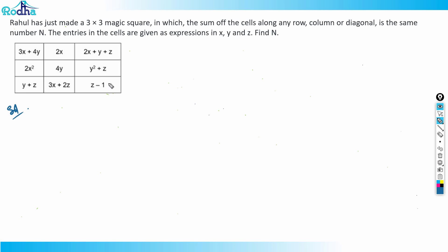We'll try to find the sum of the first column here. Sum of the first column should be equal to sum of the first row. If I equate this, we'll be getting 3x + 4y + 2x² + y + z is equal to 3x + 4y + 2x + 2x + y + z.